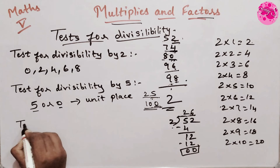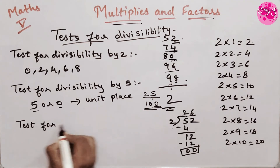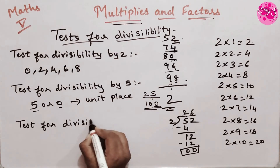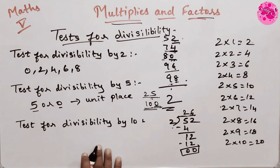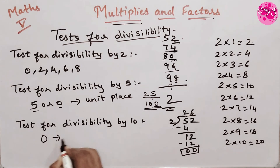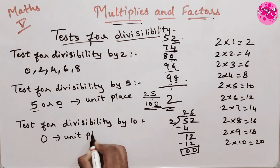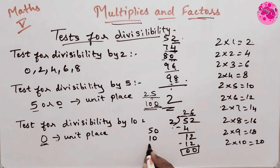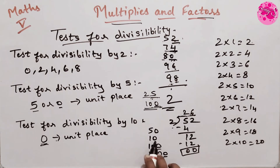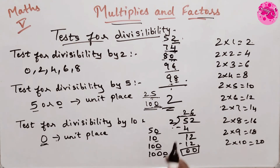Then next is the test for divisibility by 10. For this, only one rule: any number that has 0 in the units place is a multiple of 10. For example, 50, 10, 100, 1000 — whenever there is a 0 in the units place, that number is divisible by or a multiple of 10.